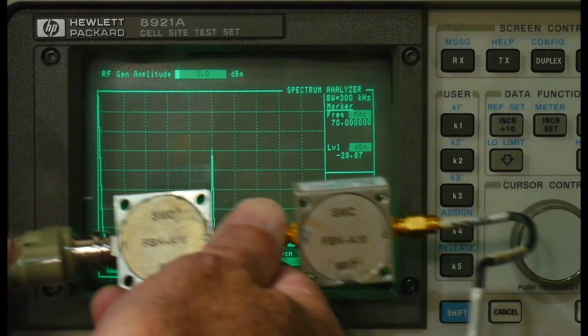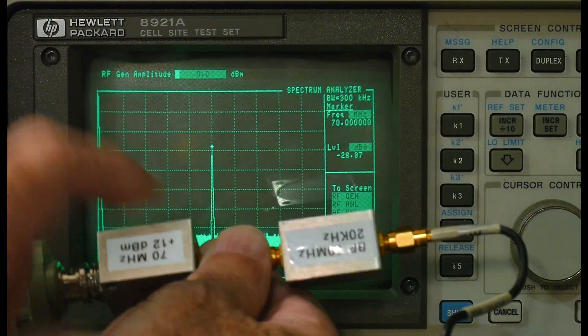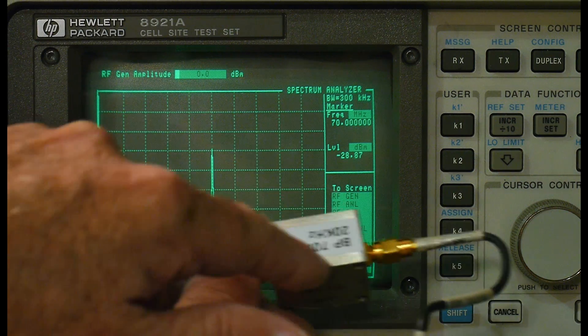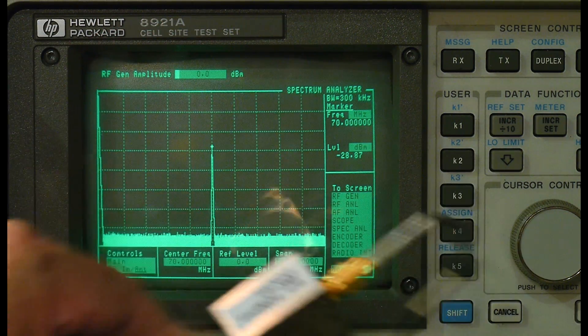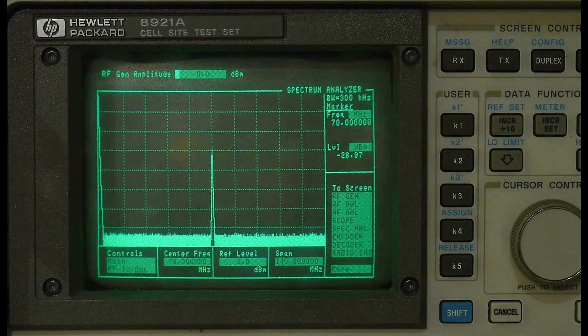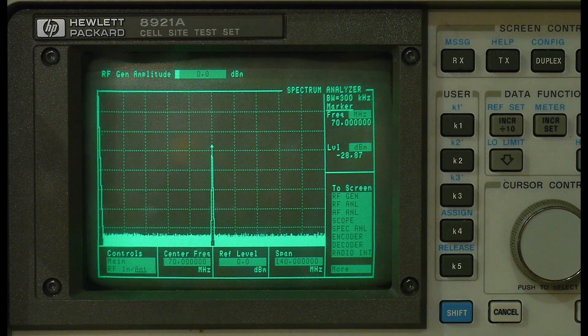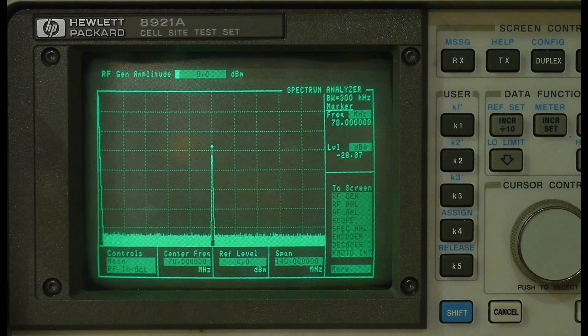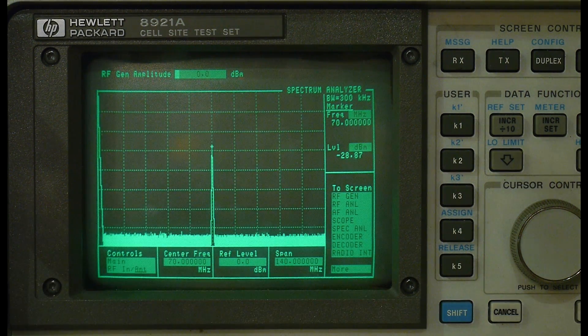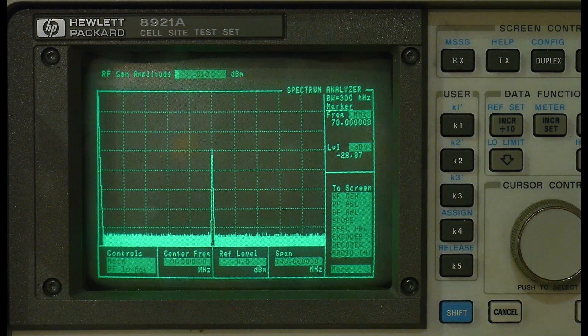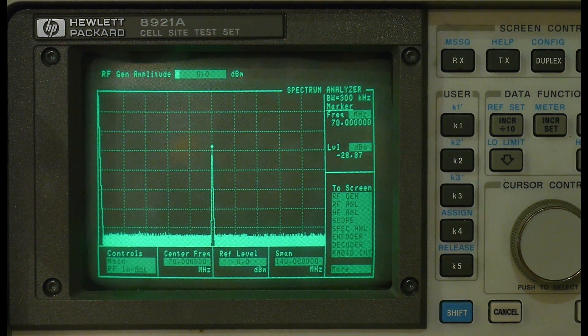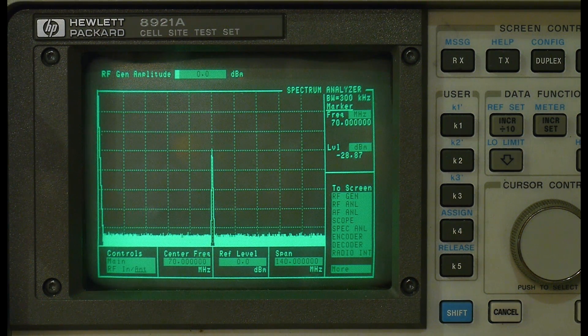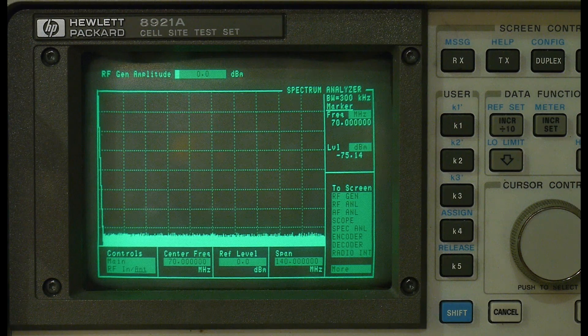This is what I'm measuring right now. I have my 70 MHz oscillator going into a cleanup filter, so I'm getting a nice spectrally clean 70 MHz. All right, so we're measuring that now. So that 70 MHz is measuring at about minus 30 dBm, minus 29 dBm.